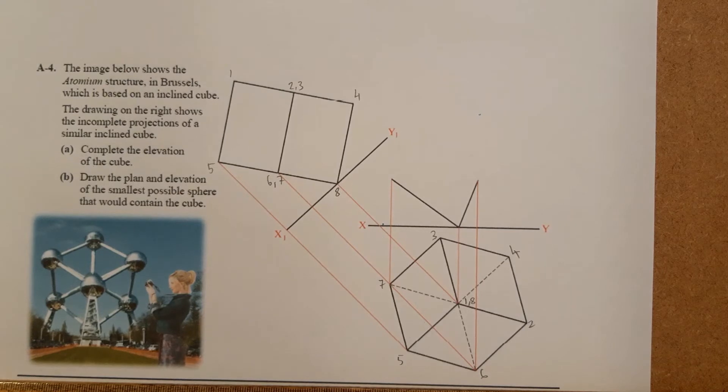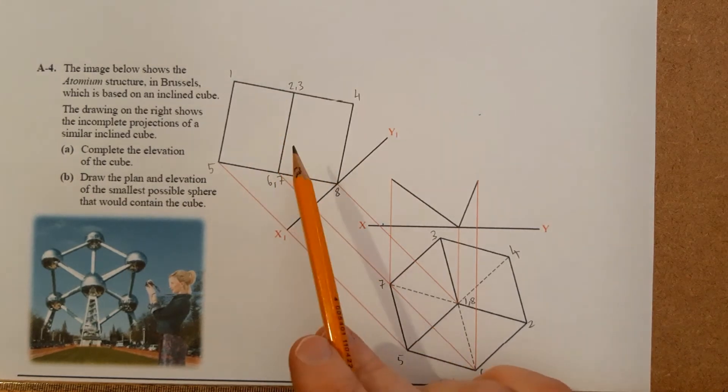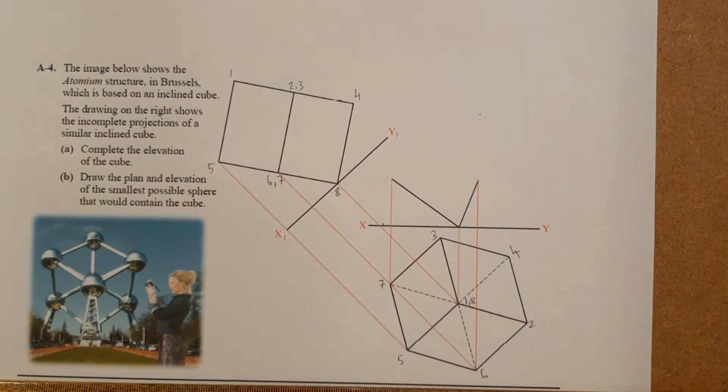Now question A4: the image below shows the Atomium structure in Brussels which is based on an inclined cube. The drawing on the right shows the incomplete projections of a similar inclined cube. Complete the elevation of the cube. So first thing I always like to do with these is label them up. Great believer in it. It makes life so easy. So if we label it up there, the auxiliary and the plan view.